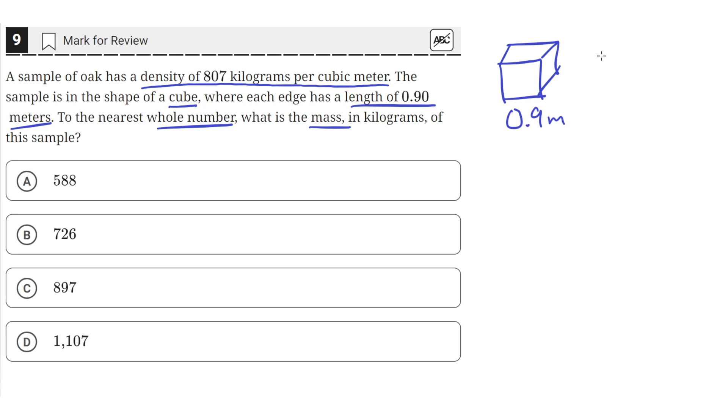The density of the sample of oak is 807 kilograms per meter cubed, and we need to find the mass of this sample of oak. So to do that, we first need to find the volume.